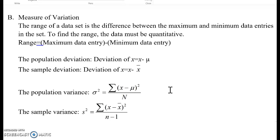Therefore, range equals maximum data entry minus minimum data entry. The population deviation is called deviation of x equals x minus mu. Mu is population mean.